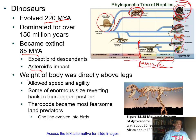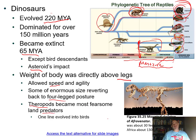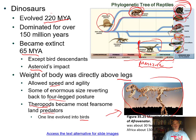Dinosaurs carried their body weight directly above their legs, allowing more agility and speed. Some enormous species went back to four legs—like the brachiosaurs. The theropods were a group of dinosaurs including the most fearsome predators. The theropods, which are diapsids evolved from archosaurs, also gave rise to birds. This theropod skeleton here looks somewhat like a T-Rex but is a different genus.